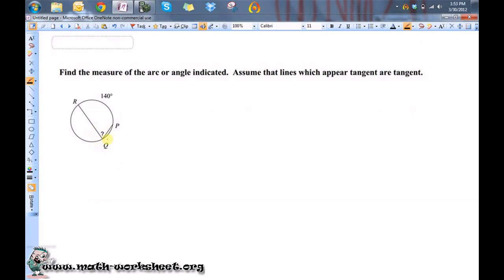So if I want to find the measure of this angle, I'm going to have to use the fact that this is what is known as an inscribed angle. You can tell it's inscribed because all of the points lie on the circle.